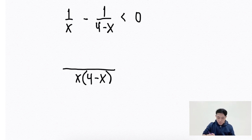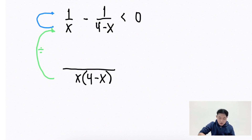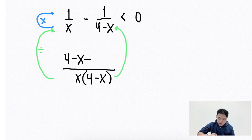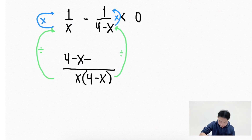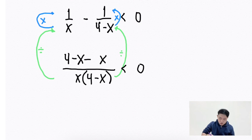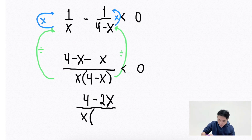x times the quantity of 4 minus x divided by x is 4 minus x. Then, x times the quantity of 4 minus x divided by 4 minus x is x. So x times the quantity of 4 minus x equals 4 minus 2x, all over x times the quantity of 4 minus x, less than 0.